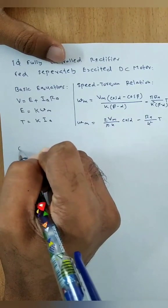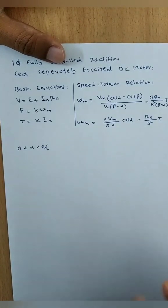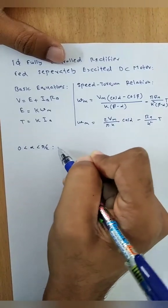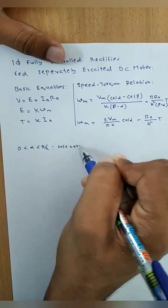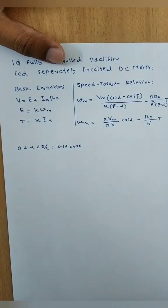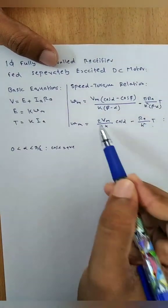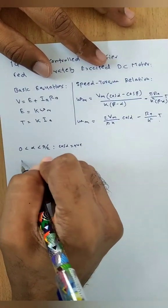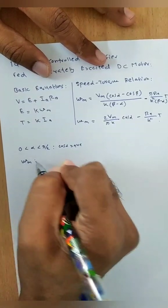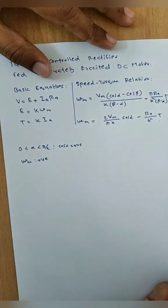First, take the case where alpha is between 0 and π/2. Here cos α is positive, and this term is very negligible, so ω_M is positive. Therefore, when the firing angle is between 0 and π/2, the motor speed ω_M is positive.